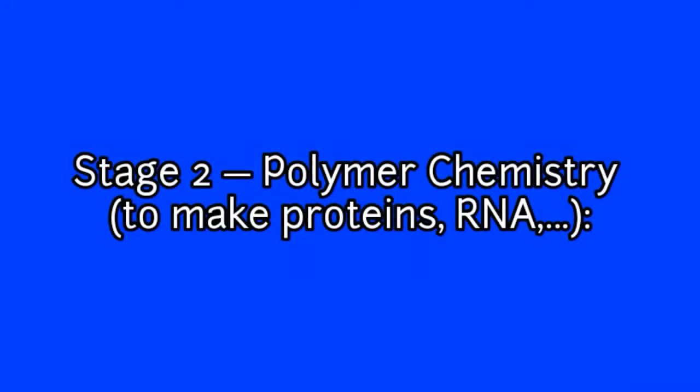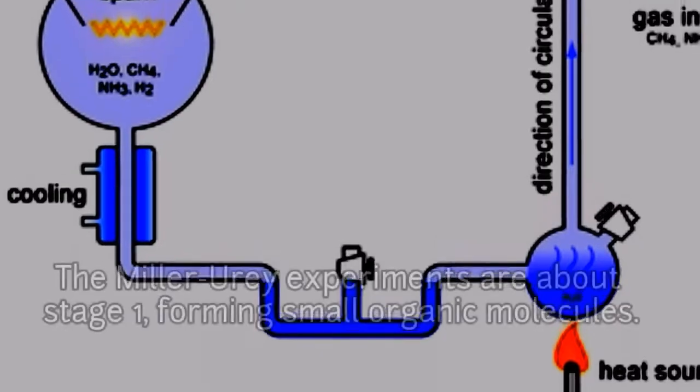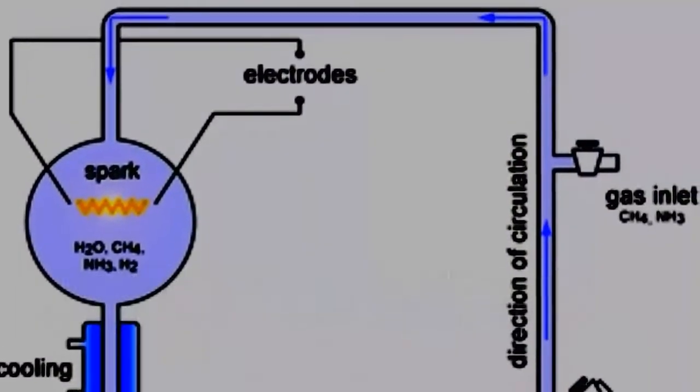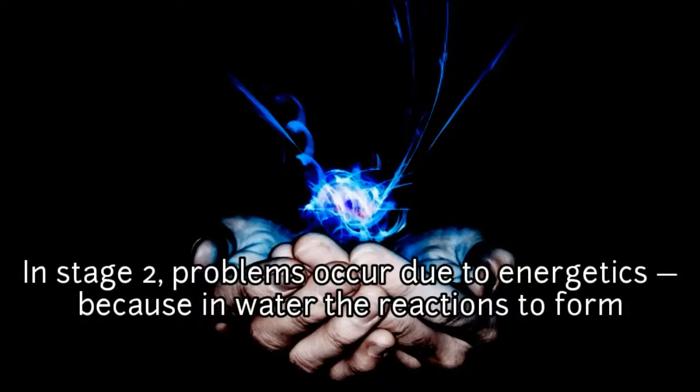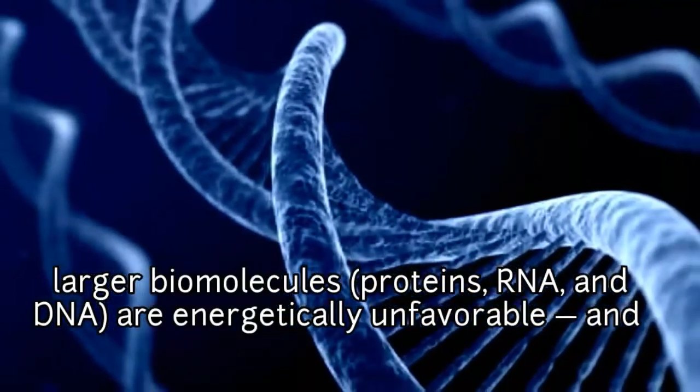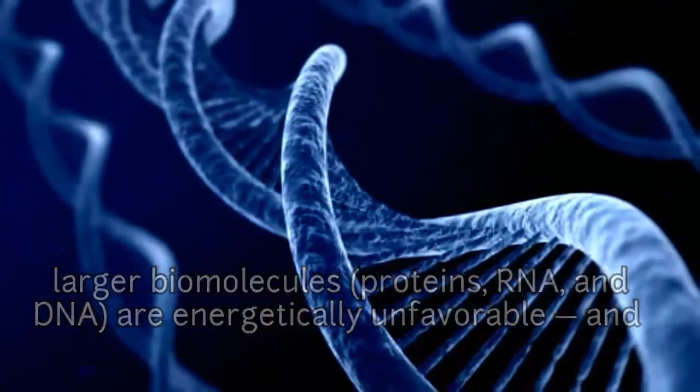Stage 2: Polymer Chemistry to make proteins and RNA. The Miller-Urey experiments are about stage 1, forming small organic molecules. In stage 2, problems occur due to energetics because in water the reactions to form larger biomolecules, proteins, RNA, and DNA are energetically unfavorable.